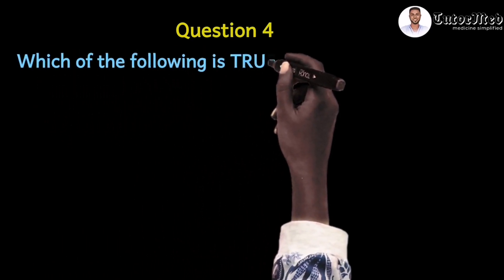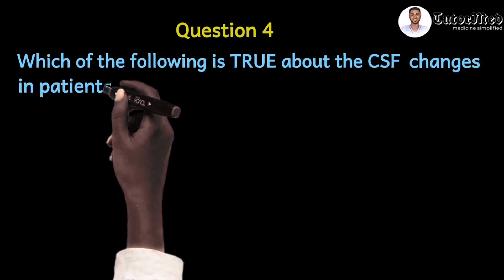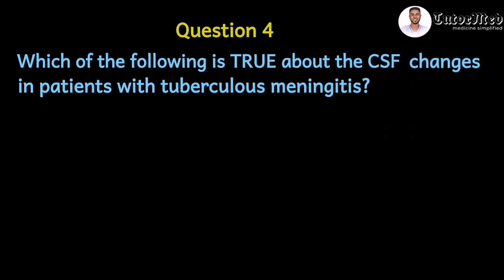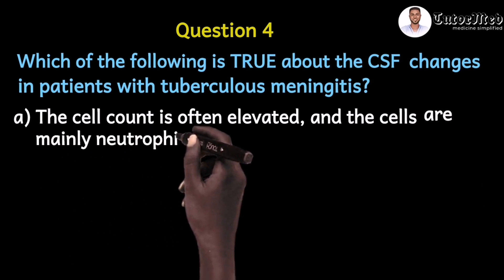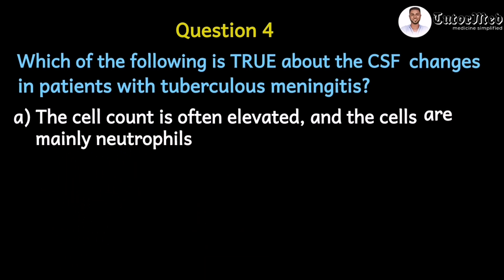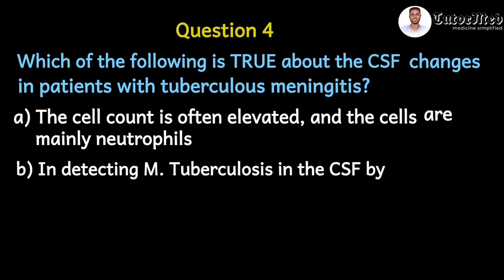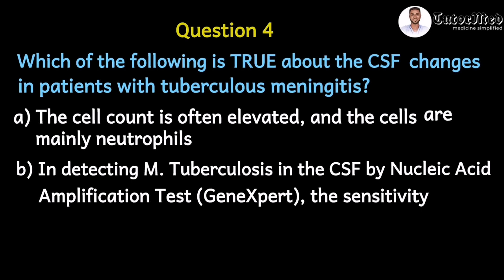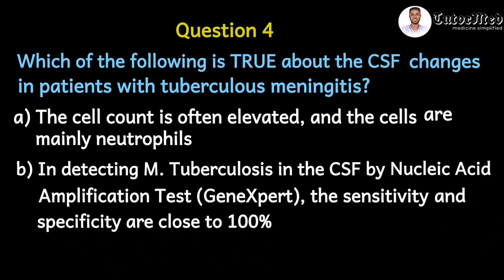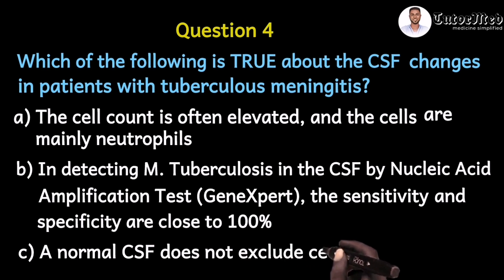Question four says: which of the following is true about CSF changes in patients with tuberculosis meningitis? Option A: the cell count is often elevated and the cells are mainly neutrophils. Option B: in detecting Mycobacterium tuberculosis in the CSF by nucleic acid amplification tests — for example, using the GeneXpert test — the sensitivity and specificity are close to 100%. Option C: a normal CSF does not exclude cerebral TB.